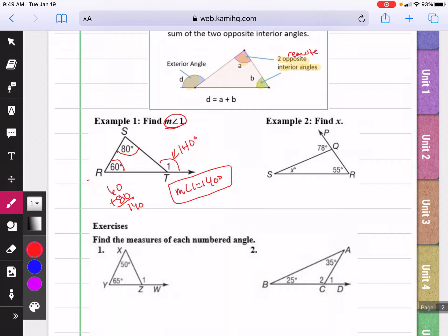In example two, they want us to find X. And we know that these two angles, X plus 55, will give us this exterior angle, 78. So then all we have to do is subtract 55 from 78 to get our answer. That comes out to 23.